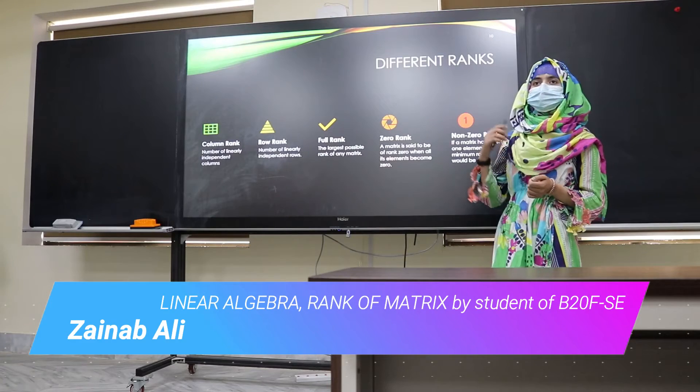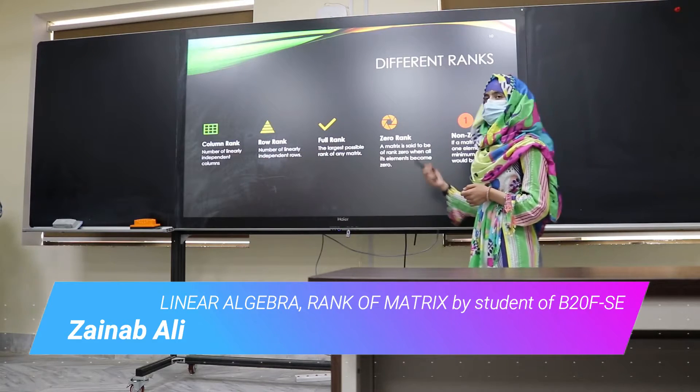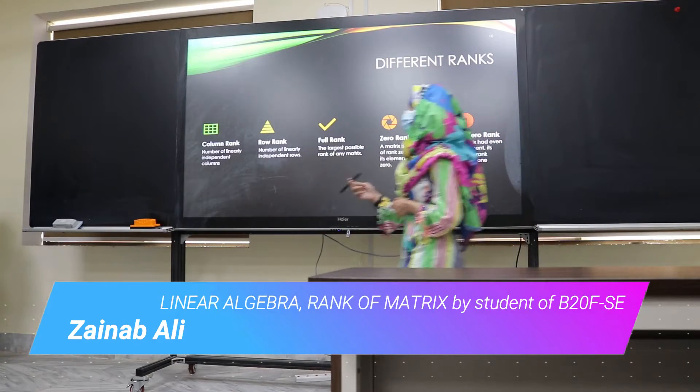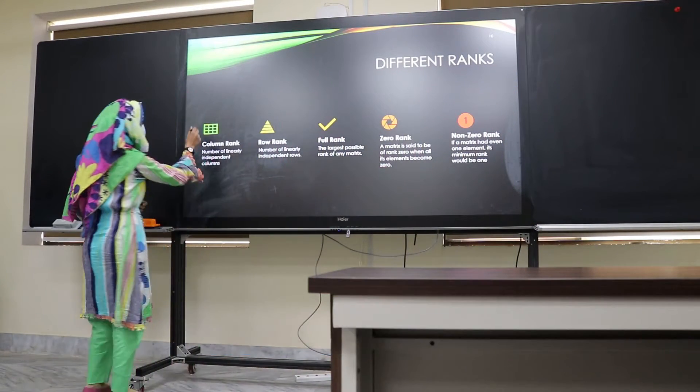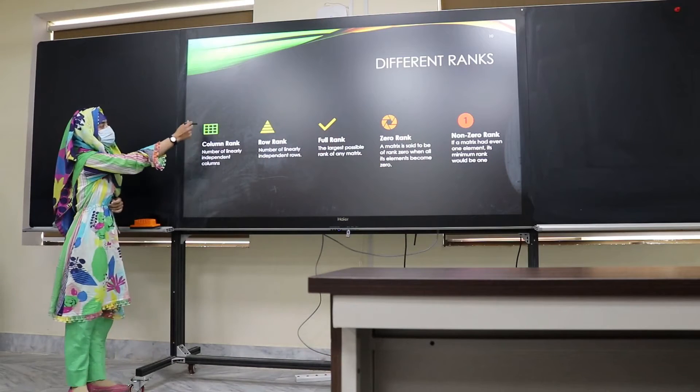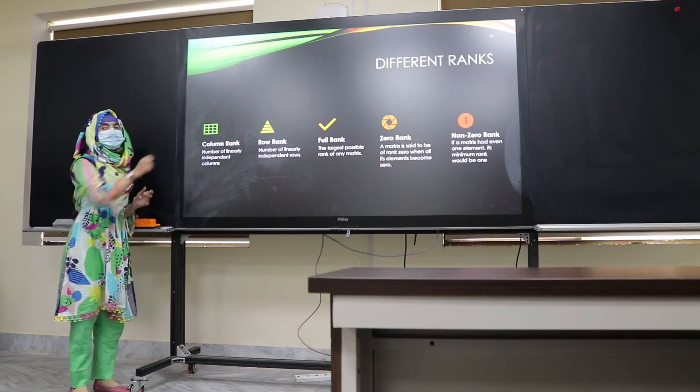First of all, to find the right match, we should know different ranks. Column rank means number of column ranks — the number of linearly independent columns.